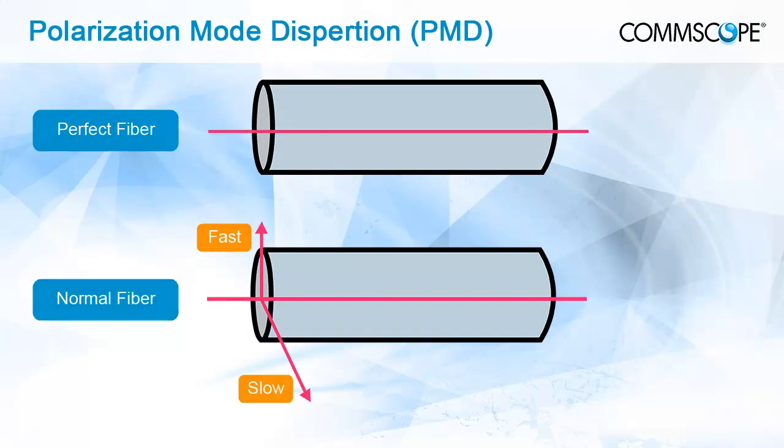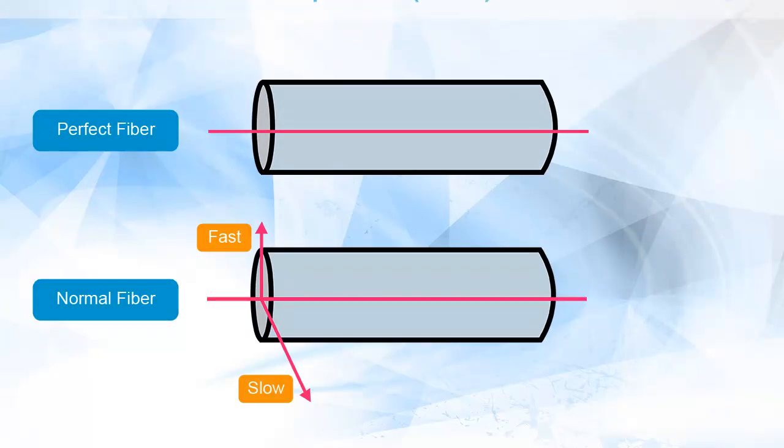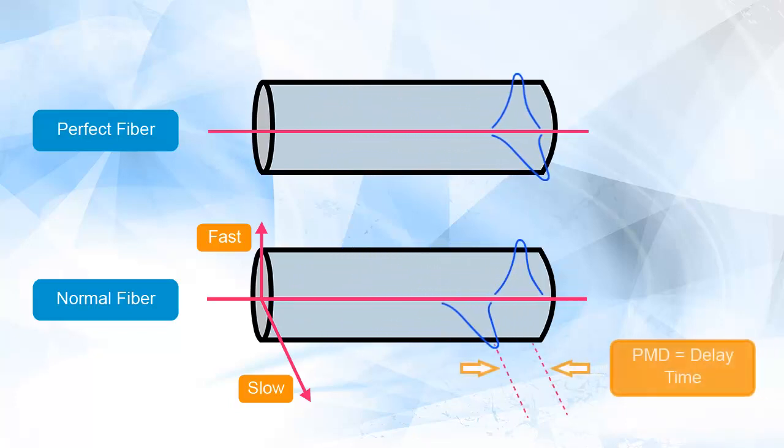Polarization mode dispersion (PMD) is a basic property of single-mode fiber that affects the magnitude of the transmission rate. PMD results from the difference in propagation speeds of the energy of a given wavelength, which is split into two polarization axes perpendicular to each other as shown in the diagram. The main causes of PMD are non-circularities of the fiber design and externally applied stresses on the fiber.